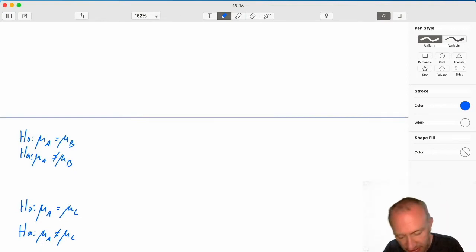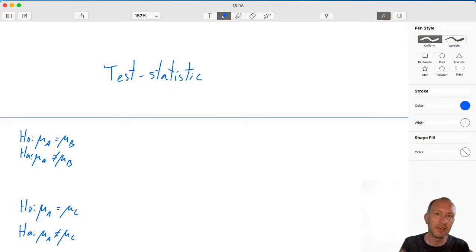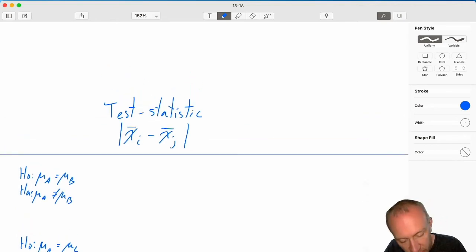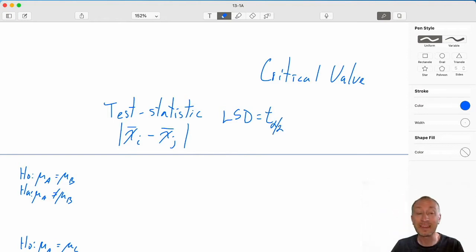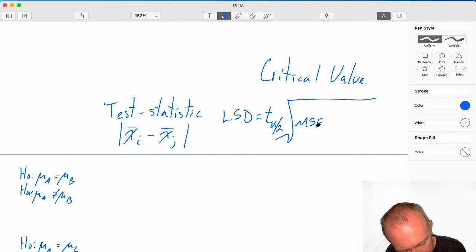So to do this test, our test statistic is perhaps the simplest test statistic of all of those that we've looked at. The test statistic is simply the point estimate of the difference between each sample means. So when I'm comparing samples A and B, that test statistic is just the difference of those sample means. We're going to use a critical value approach. There is a p-value approach, a t-test approach to doing this. Here I'm going to use the critical value approach.